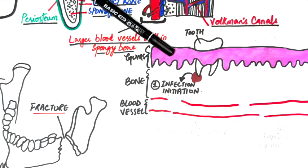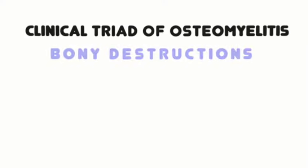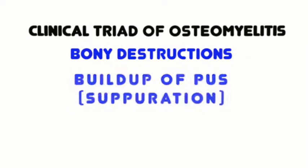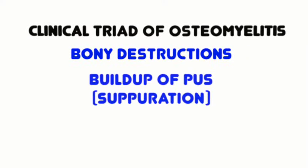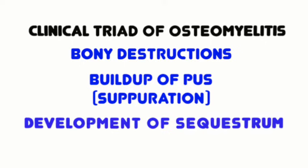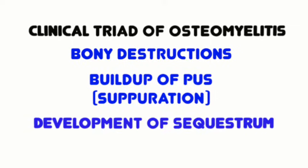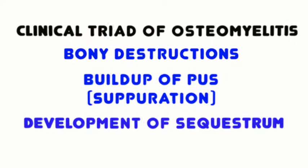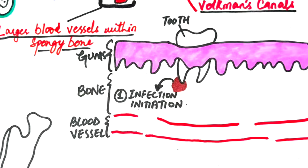The pathophysiology of osteomyelitis can be recognized by the clinical triad of bony destruction, the buildup of pus known as suppuration, and the development of sequestra or necrotic bone tissue. Let's look at the key steps in the pathophysiology of osteomyelitis.